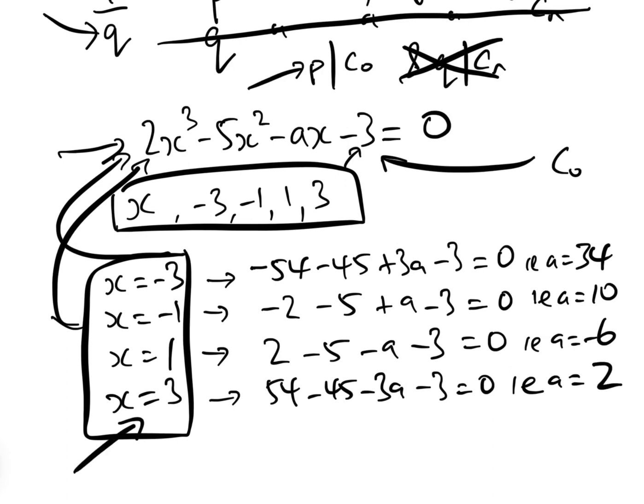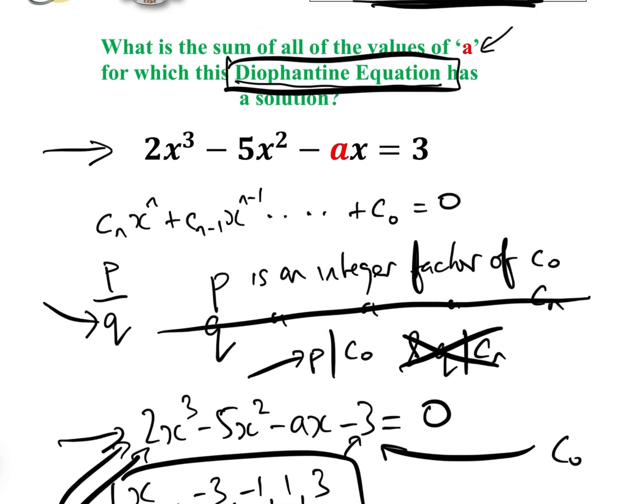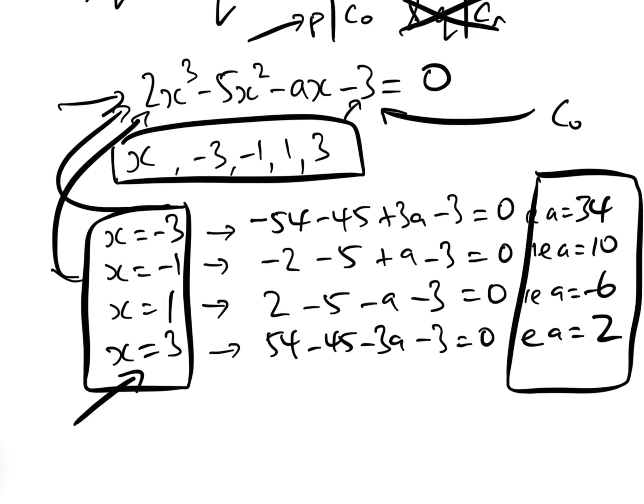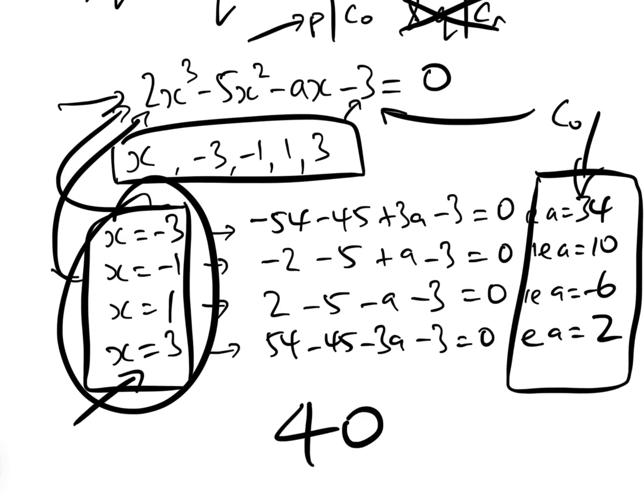Okay, so these are the only four possible x values, and therefore these are the only four a values. And all we need to do, the question asks us, what is the sum of all the values of a for which the Diophantine equation has a solution? Well, the Diophantine equation, this one only has a solution for these four x values, and a must be these values for these four x values, so 34 add 10 minus 6, add 2, is 40. So the sum of all of the a's is 40.